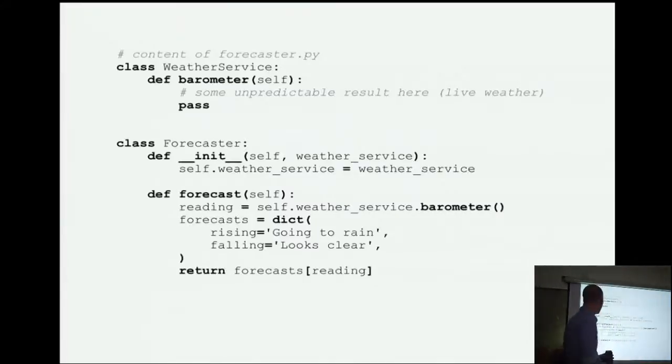Stubbing return values. So, here's a class called weather service. It's got a barometer. And let's pretend this is a real weather service class that goes out to the internet and then does something. So, we don't really want it doing this in our test because it's unpredictable. We'd like our test to be deterministic. So, maybe we have this forecaster class. I'm sorry for my contrived examples. So, forecaster, you give it an instance of weather service. And then you say, hey, forecaster, forecast. And what he'll do is he'll call the weather service and he'll say, hey, what's the barometer at right now? And then he'll just look up in a dict, right? If the barometer says it's rising, then it's going to rain. And if it's falling, then it looks clear like it's not going to rain. And so, that's all this is doing.